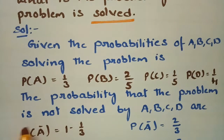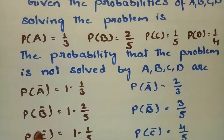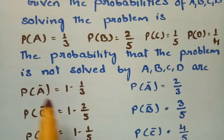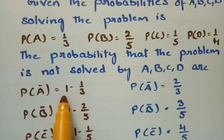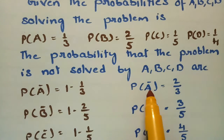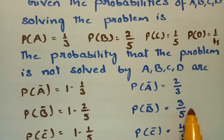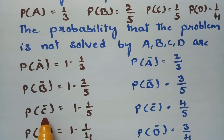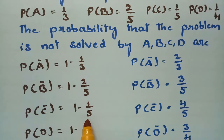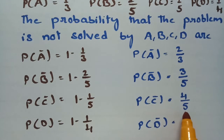The probability that the problem is not solved by A, B, C, D: the complement probability A̅ = 1 − P(A) = 1 − 1/3 = 2/3. That is the probability that A cannot solve the problem. The probability that B cannot solve the problem is 1 − P(B) = 3/5. The probability that C cannot solve the problem is C̅ = 1 − P(C) = 1 − 1/5 = 4/5.